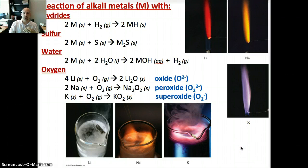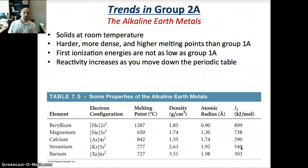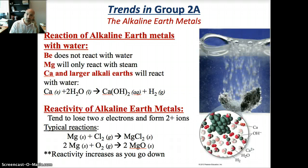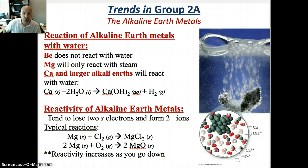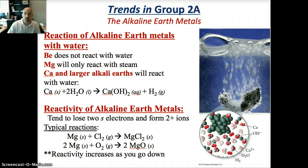Group 2A is the alkaline earth metals. These are mostly solids at room temperature, harder, more dense, and have higher melting points than Group 1A. Reactivity increases as you move down the periodic table. Only the alkaline earth metals of calcium and larger — farther down the periodic table — will actually react with water to produce that metal hydroxide and hydrogen gas, as shown here in the figure.